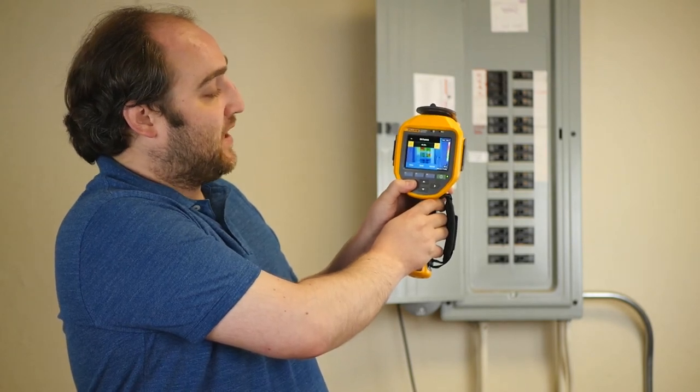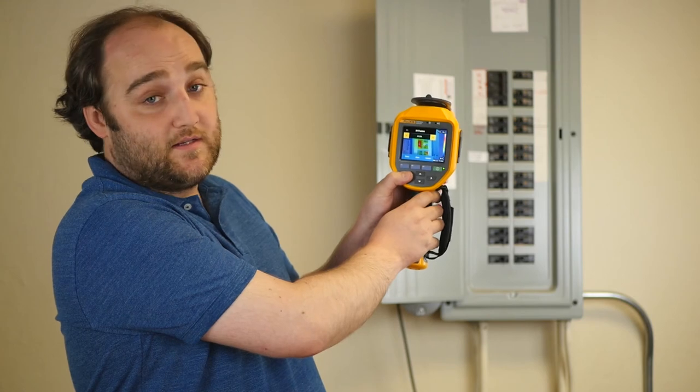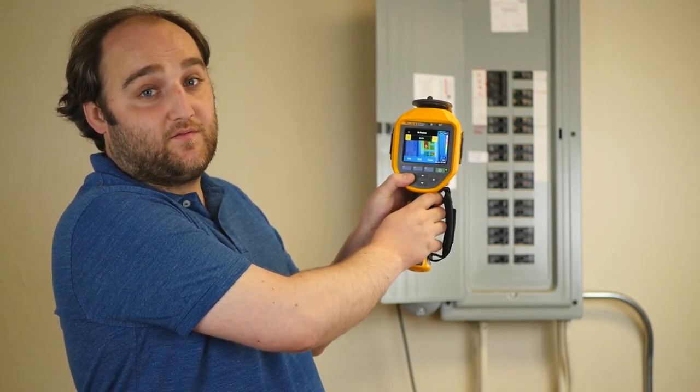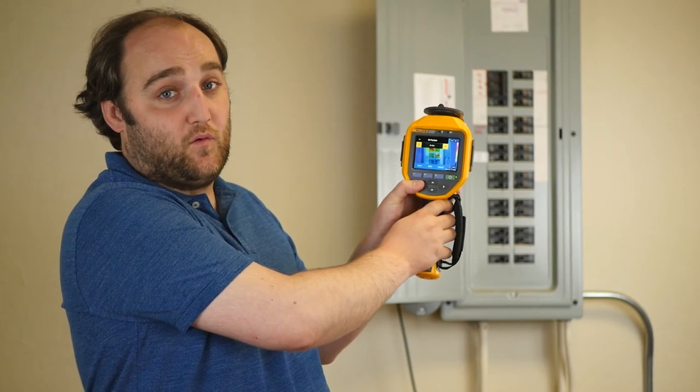25% might be a little low, but at this level you can clearly see all the labels on the panel and get a good sense of context for your thermal image when you go back and write your report.